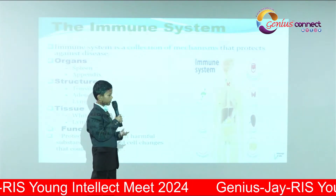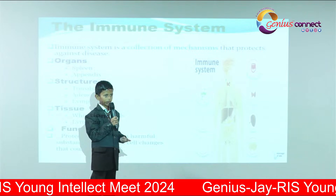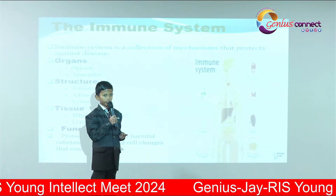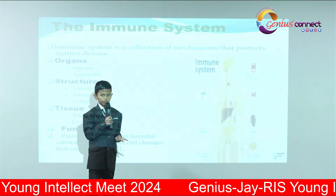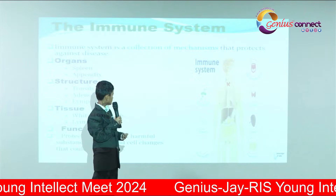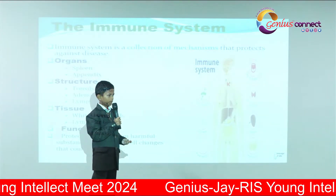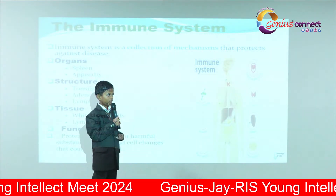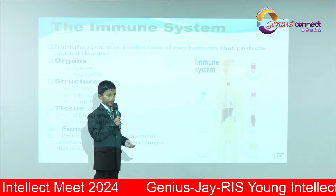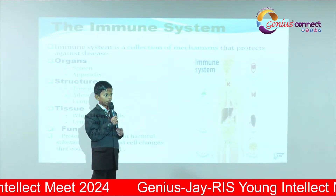Organs include the spleen and appendix. Structures include tonsils, adenoids, and lymph nodes. Function: to protect the body from harmful substances, germs, and cell changes that could make us ill.